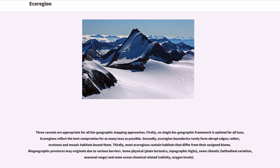Thirdly, most ecoregions contain habitats that differ from their assigned biome. Biogeographic provinces may originate due to various barriers: some physical, some climatic, and some ocean chemical related. The history of the term is somewhat vague and it had been used in many contexts: forest classifications, biome classifications, biogeographic classifications, etc.